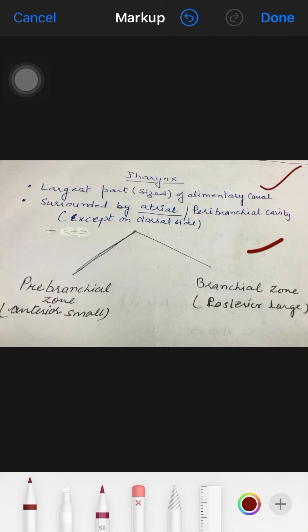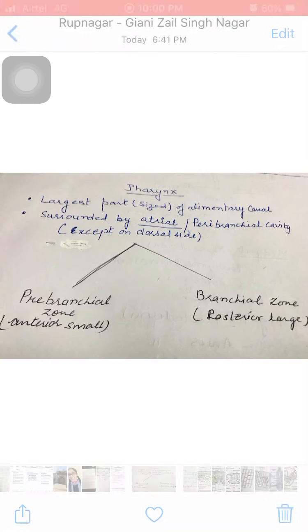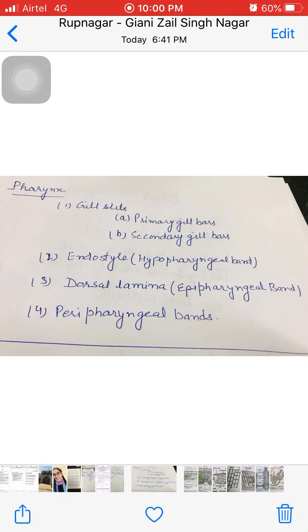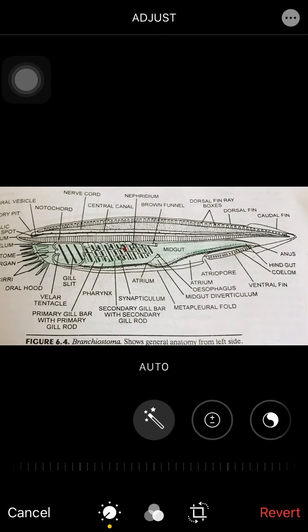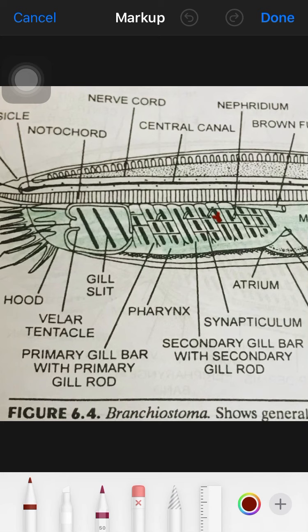Now we start with one by one these two parts. This pharynx has major portions to discuss: gill slits, endostyle, dorsal lamina, and perifaryngeal band. This pharynx, which we can say is the anterior prebranchial region, lies here.